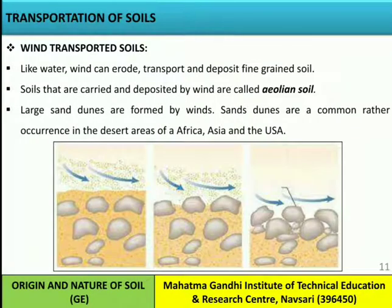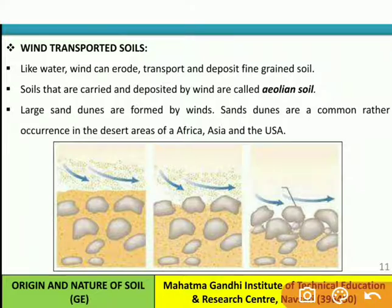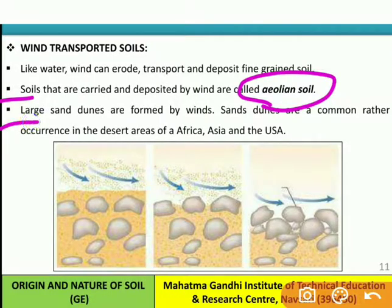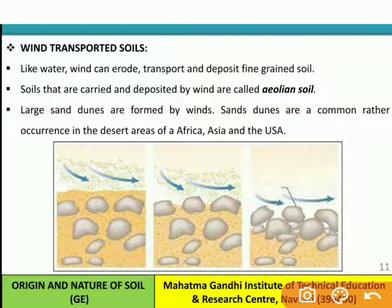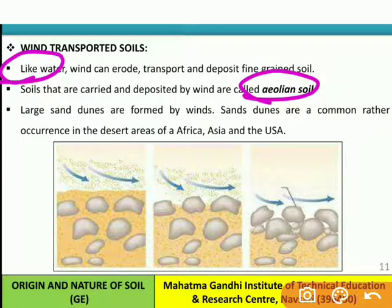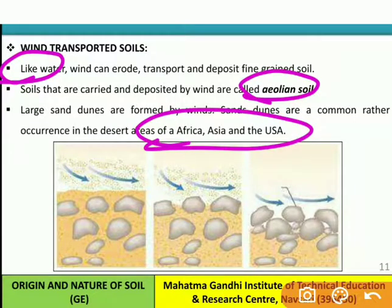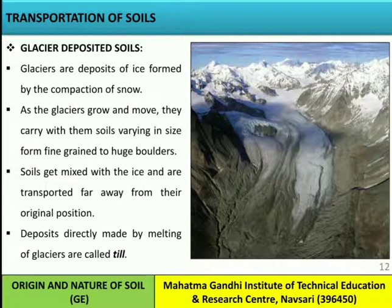Wind-transported soil: like water, wind can erode, transport, and deposit fine-grained soil. Soils carried and deposited by wind are known as aeolian soil, and large sand dunes are formed by winds. Sand dunes are a common occurrence in desert areas of Africa, Asia, and the USA.